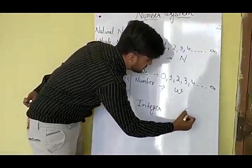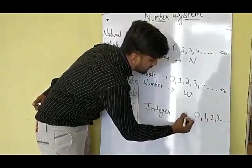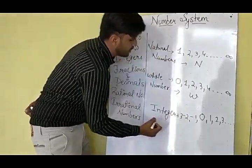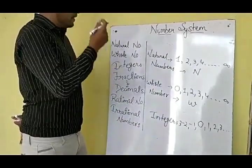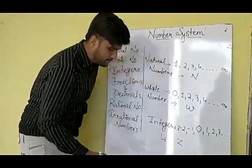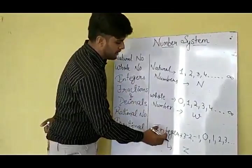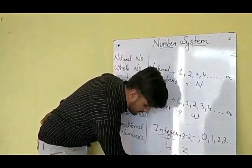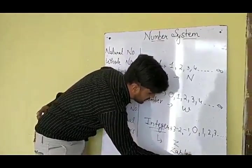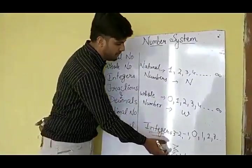Now, how do we write them? We write 0, 1, 2, 3, and so on. And from here we write minus 1, minus 2, minus 3, and so on. Integers are represented by the symbol Z. You must be wondering why they are represented by Z — because the word integer has come from the German word 'Zehlen'. Zehlen means 'to count', and the Z comes from Zehlen.